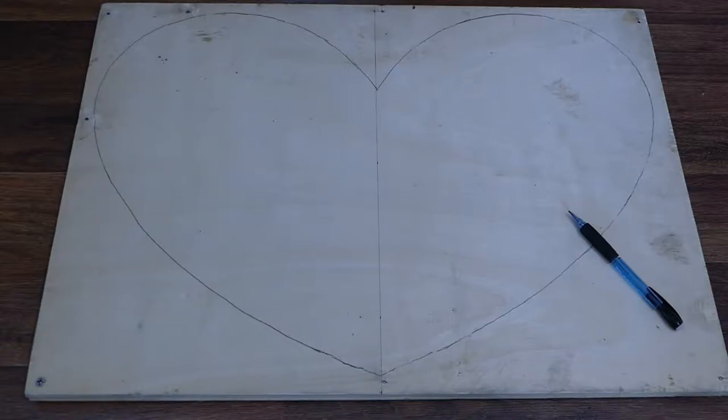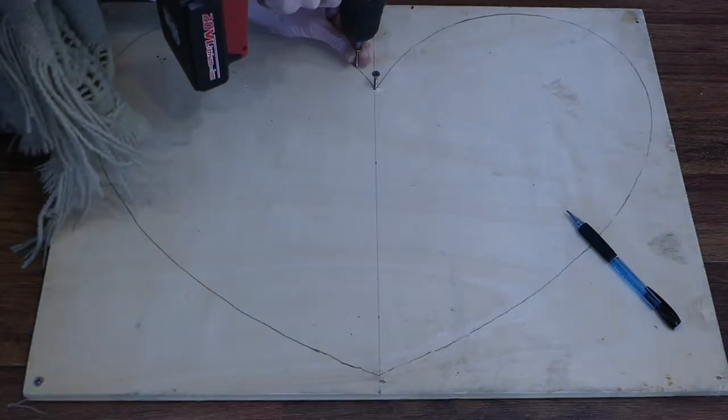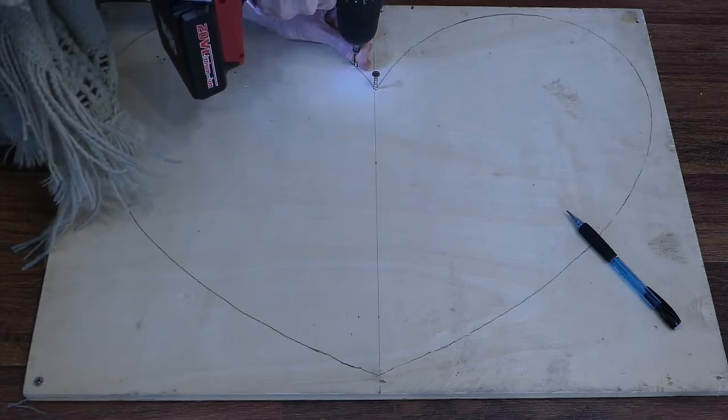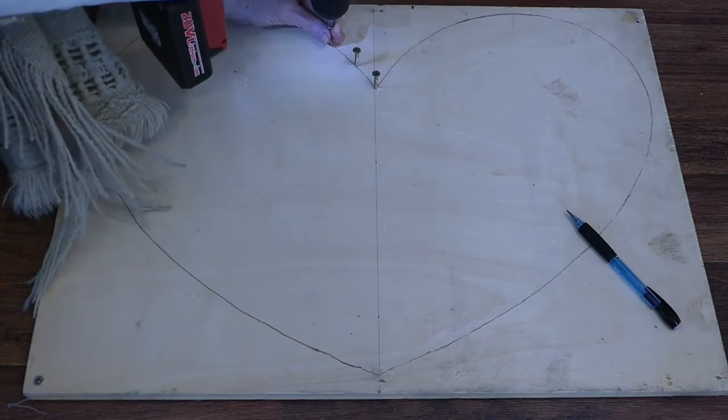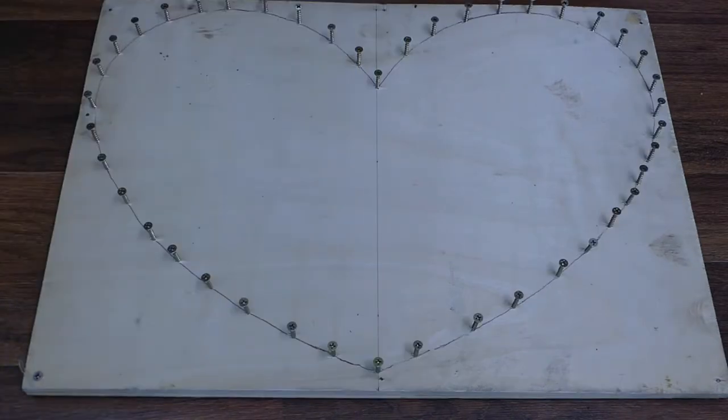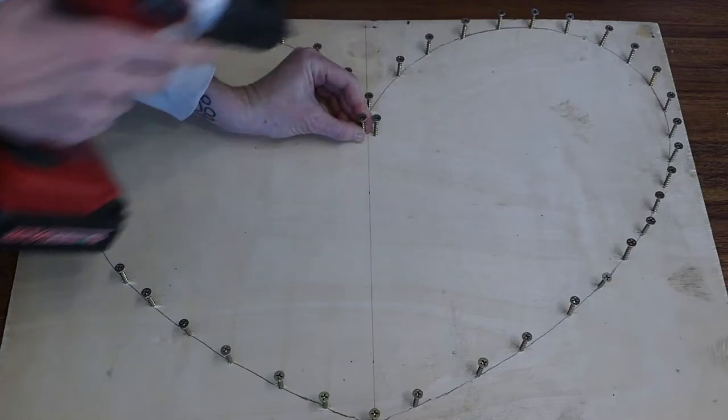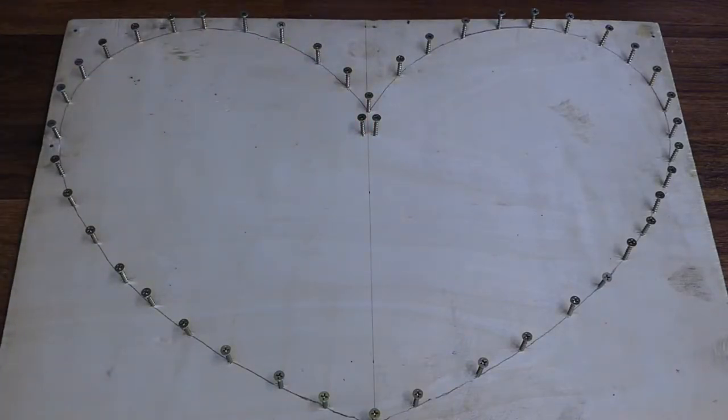While the reeds are soaking, draw your wreath shape on the board with a pencil. Drill screws into the shape. You'll want to place them so they guide the reeds and help them form the shape. I'm also adding two additional screws to secure the reed where I'll be starting from.